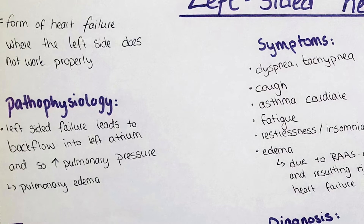We know that the left side of the heart receives oxygen-loaded blood from the lungs, which the left side of the heart further will pump out into the aorta into the systemic circulation. An important term to remember when we think about left-sided heart failure is backflow, because left-sided heart failure causes blood to back up into the lungs.